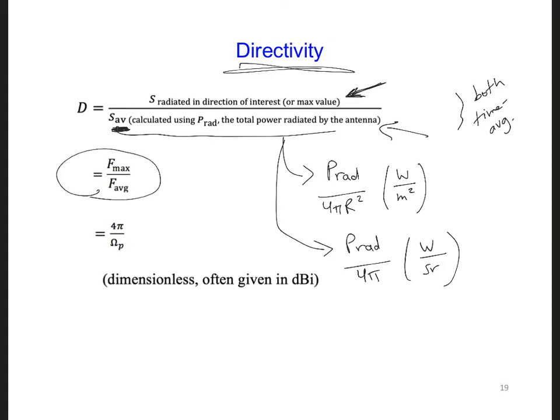Alternatively, if you know f, which is radiated, the normalized radiation intensity, you can calculate the directivity using this. Or if you know the beam pattern solid angle, you can use that to calculate the directivity as well.